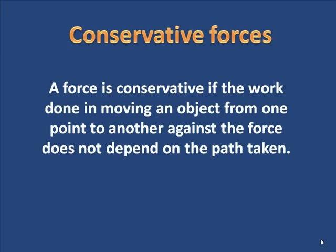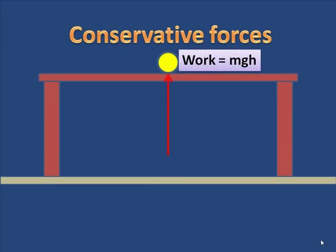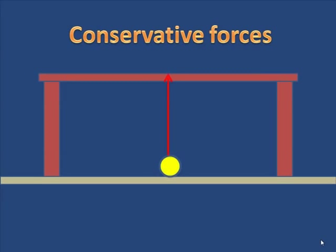Let me illustrate. Let's suppose I want to lift a ball up to the top of a table. You know that if I lift it up against gravity, the work done is MGH. But do you realize that it doesn't matter what path I take to get there, the work will always be MGH. If I took a path as shown there, and no matter where I put it on the table, the work done is still MGH.